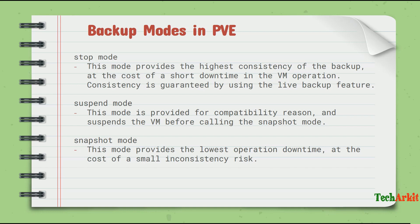There is one more mode called snapshot mode. This mode provides the lowest operational downtime at the cost of a small inconsistency risk. It does not stop the virtual machine — it just freezes the file system for a few seconds, takes a snapshot of that data, and converts it into a backup. Most of the time, containers or virtual machines don't require any downtime, and users won't even notice the freeze and unfreeze — it's just a few seconds or milliseconds.